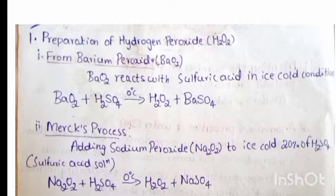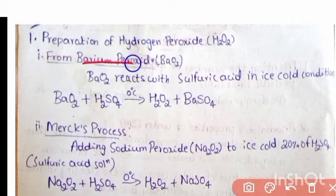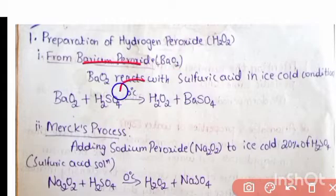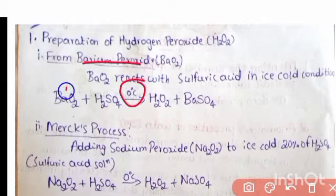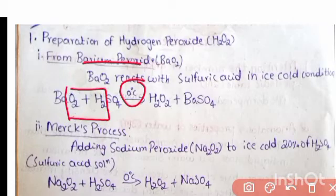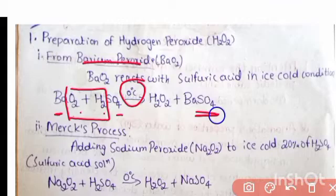Preparation of hydrogen peroxide. First method: from barium peroxide (BaO2). Barium peroxide is reacted with concentrated sulfuric acid at ice cold conditions (zero degrees Celsius). This forms hydrogen peroxide, our main product, and barium sulfate (BaSO4).